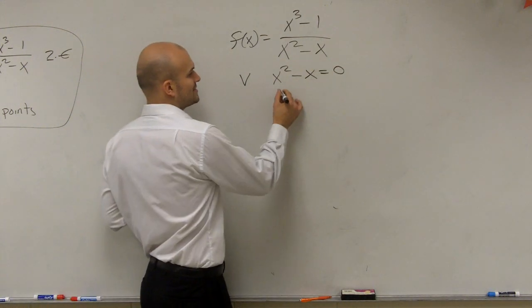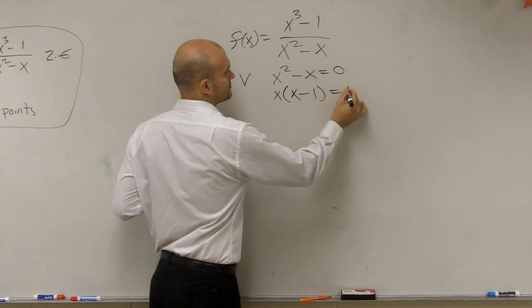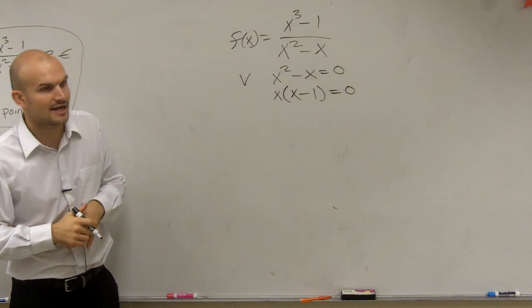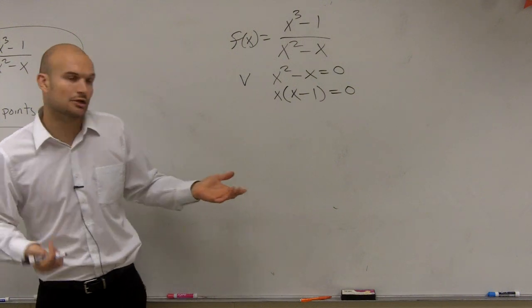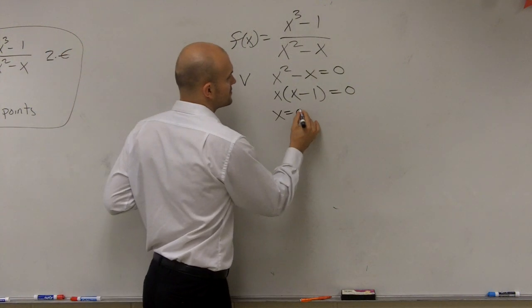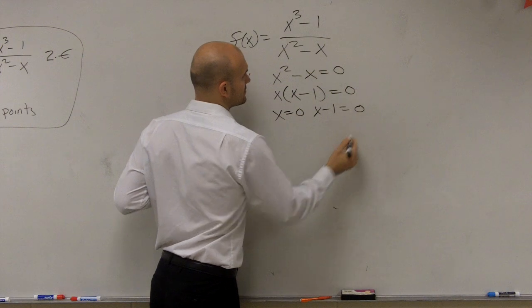I have to use a factoring technique. So I'm going to factor out an x, and I get x times x minus 1 equals 0. Now I can use the zero product property to say x equals 0, and x minus 1 equals 0.